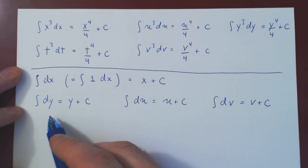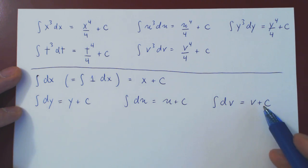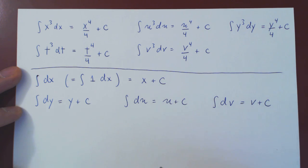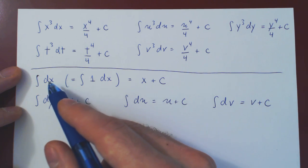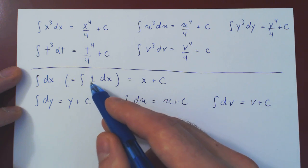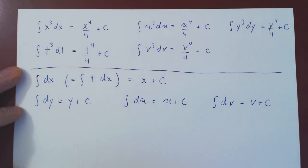So, again, think about this in any way you want. If you integrate a differential, you undo the operation and you get the variable back. Or think of the differential being 1 times the differential, and then, of course, you get, as an anti-derivative, the variable.